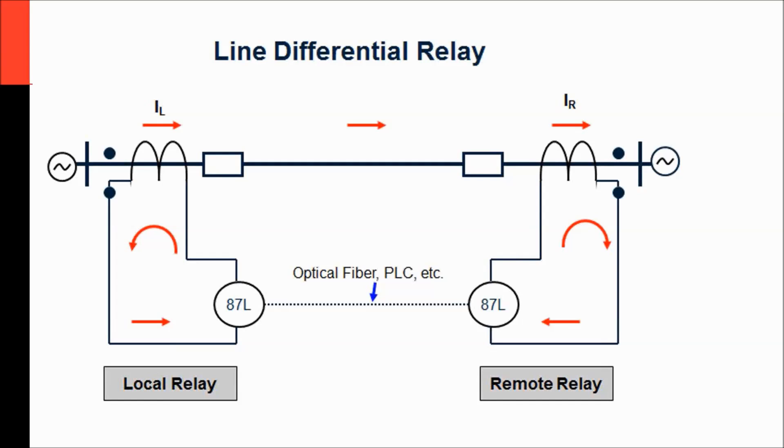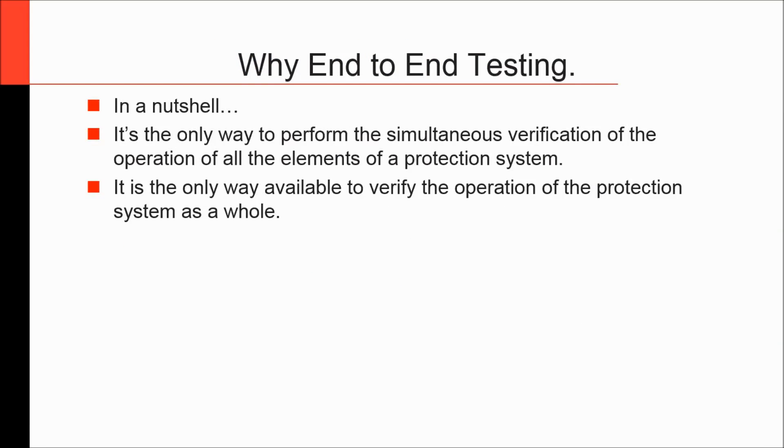At some point, someone might think, I will apply the signal to what I call here the local relay and see if it picks up, then I will apply a signal on the other end to the remote relay and see if it picks up and then I'm happy. But there are so many issues that could happen with the communication between the relays and with the interpretation of the signals that is made from both ends for the same fault that is applied on the line. The only way to ensure the proper testing of such a scheme is to apply signals at the same time on the relays and evaluate whether both those relays acted properly or not.